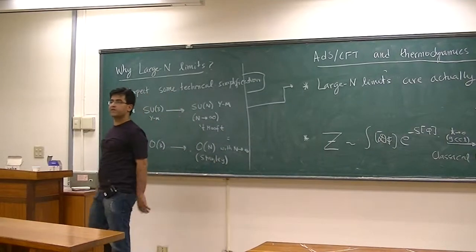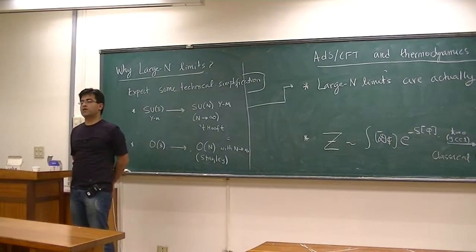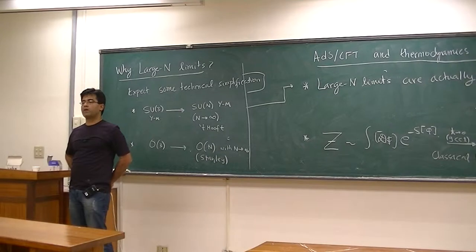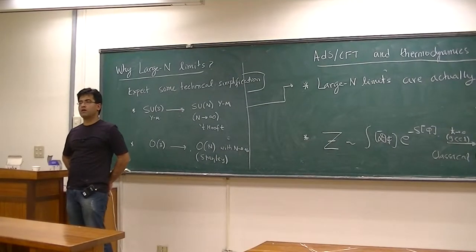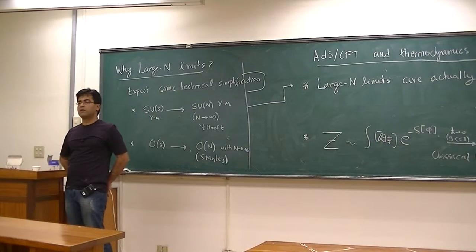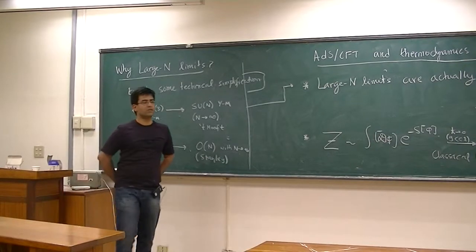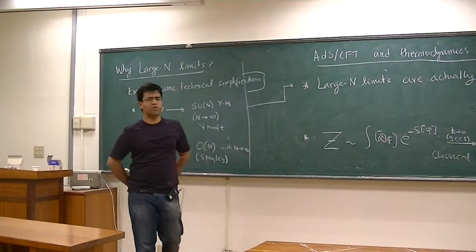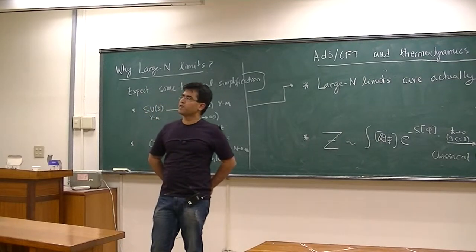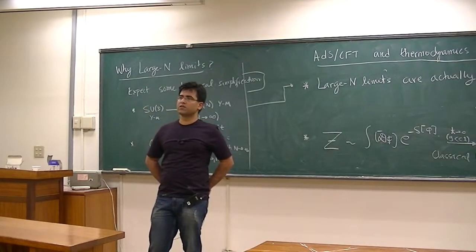There are non-perturbative corrections. The question is, is it always possible to have a smooth connection from finite N to large N? Is it always a perturbative connection? Isn't your question equivalent to asking whether the 1/N expansion converges?